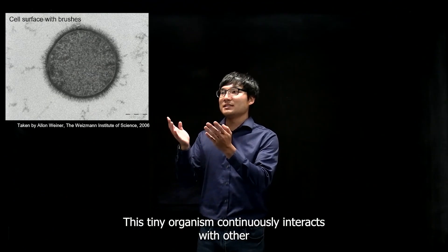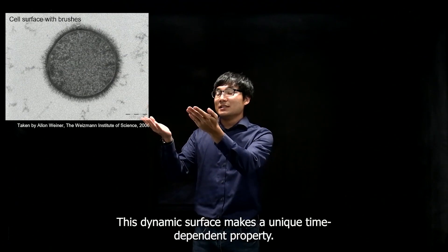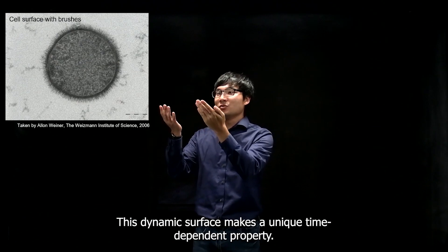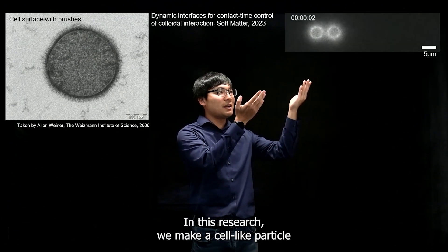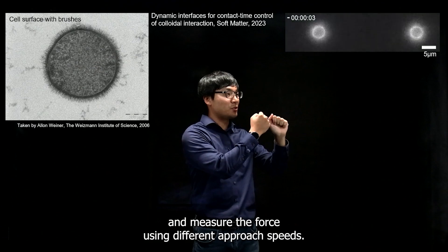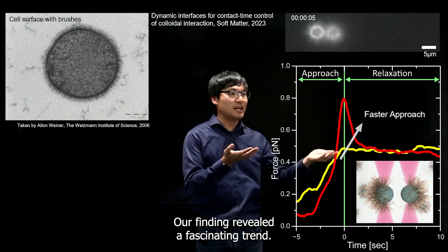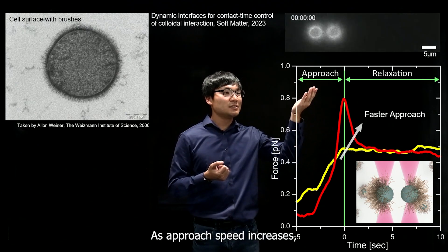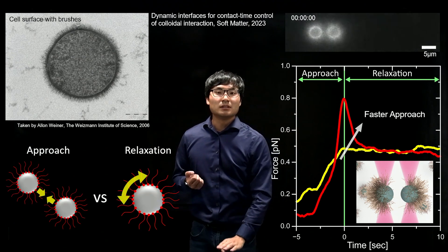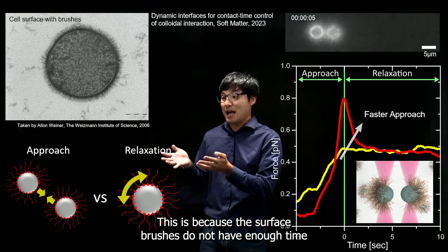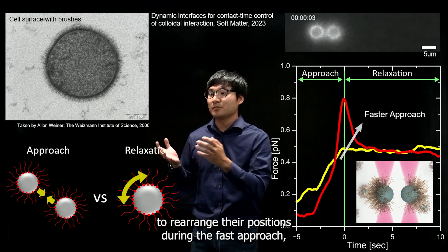This is a cell. This tiny organism continuously interacts with other cells through their brush-like surface. This dynamic surface makes a unique time-dependent property. In this research, we make a cell-like particle and measure the force using different approach speeds. Our findings revealed a fascinating trend: as approach speeds increase, the repulsion force and relaxation time also increase.